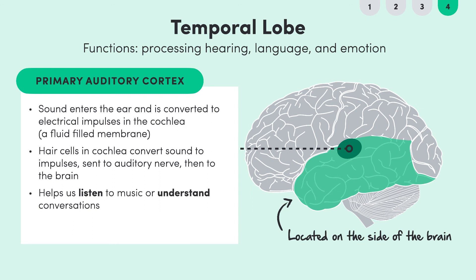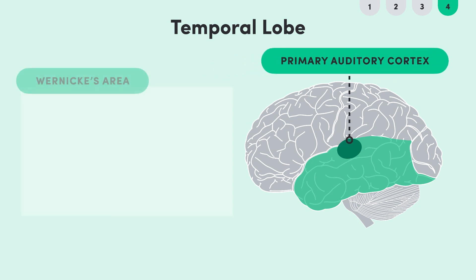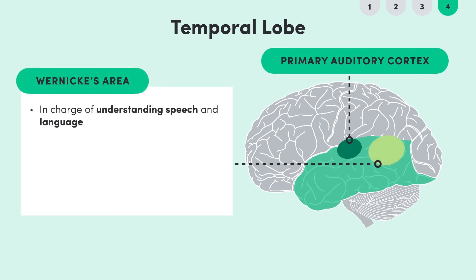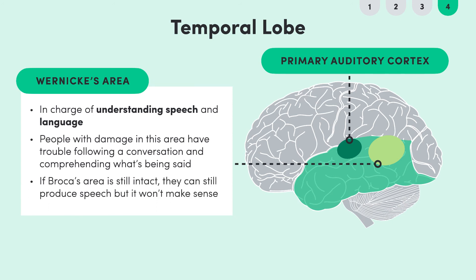The primary auditory cortex also processes things like the pitch and volume of a sound. The temporal lobe is also home to Wernicke's area, the counterpart to Broca's area. Wernicke's area is in charge of understanding speech and language. People who have damaged their Wernicke's area have trouble following a conversation and comprehending what's being said. But if their Broca's area is still intact, they can still produce speech — it just won't make that much sense.